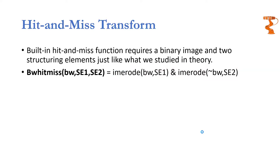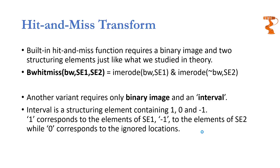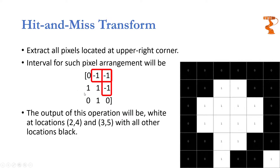The second implementation combines the two structuring elements into one interval. An interval is a structuring element containing three different values: 1 corresponds to the element of the object, minus 1 corresponds to the element of the background, while 0 corresponds to the don't care pixels. This interval may be used to extract all upper right corners present in the object. The ones correspond to the inner corner, while minus 1 corresponds to the background pixels neighboring the corner. So if we implement the hit and miss transform using this interval onto the shown image, we will get a hit at this location and at this location.